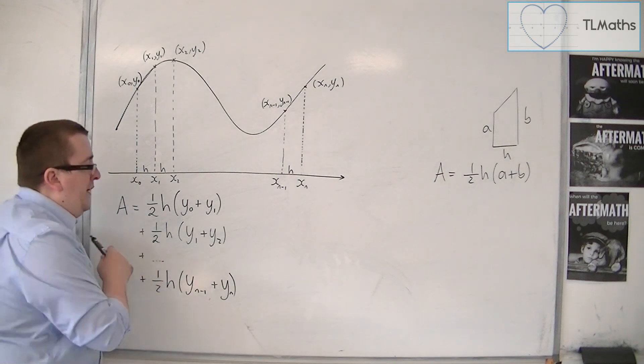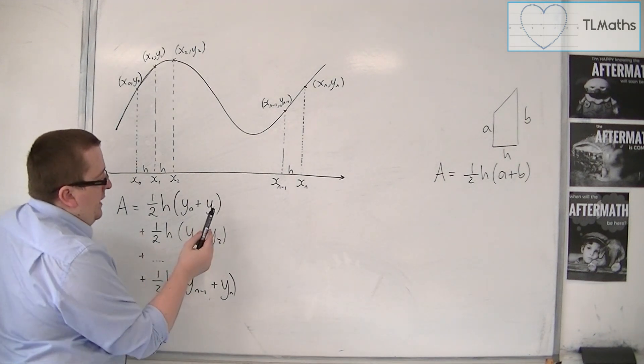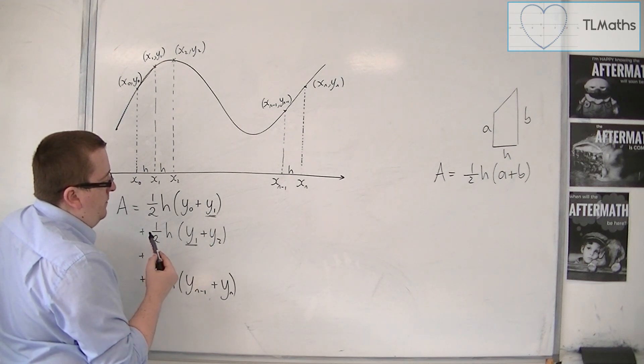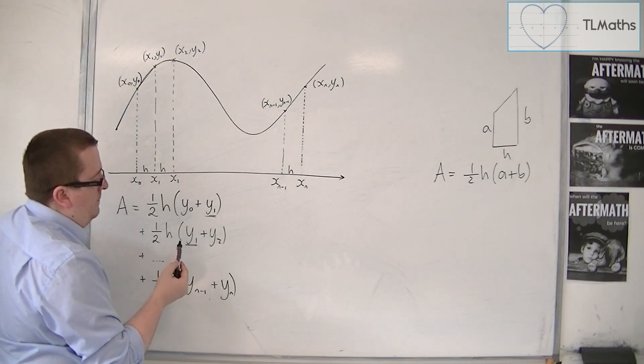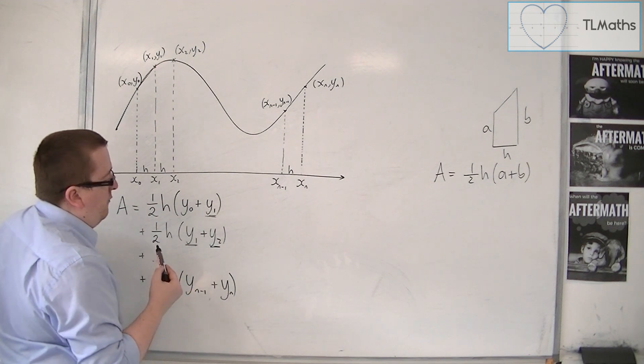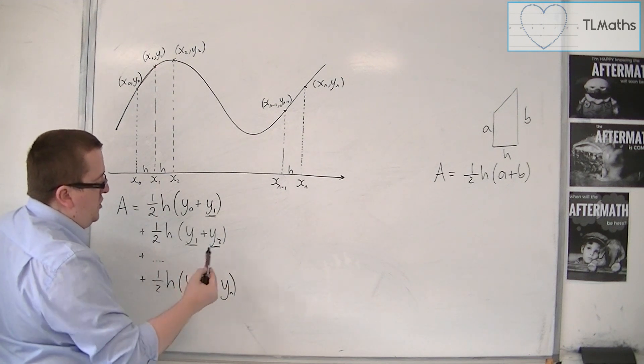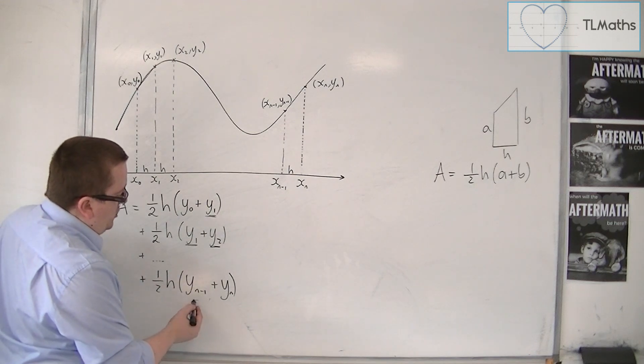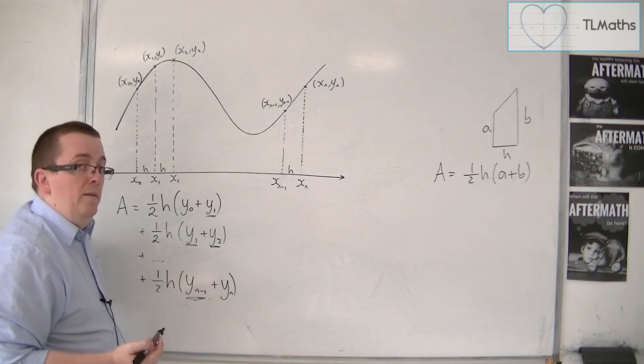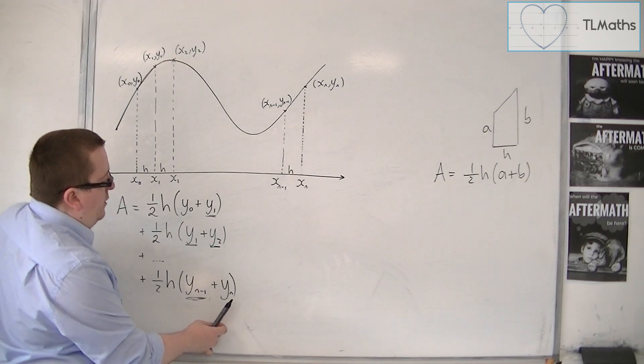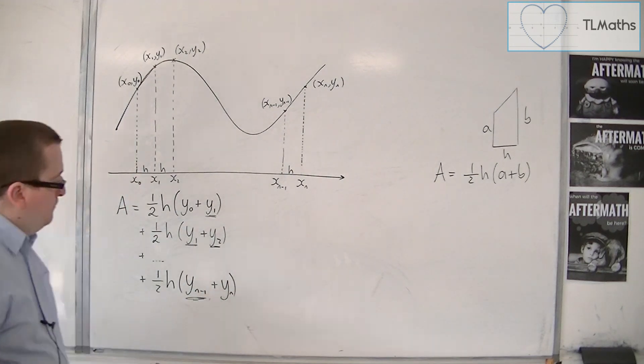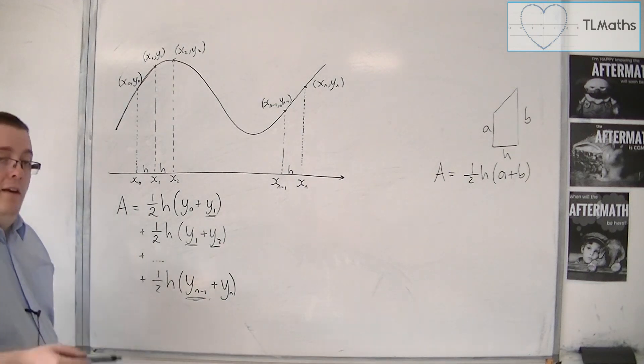Now, what we'll see in each time is that we're going to have this y1 repeated each time, so there's going to be a repetition of y1. There's also going to be a repeat of y2, so two y2s, two y3s, two y4s, two y5s, and all the way down to two lots of yn minus 1. But there won't be a pair for either y0 or yn. So they'll be left alone.